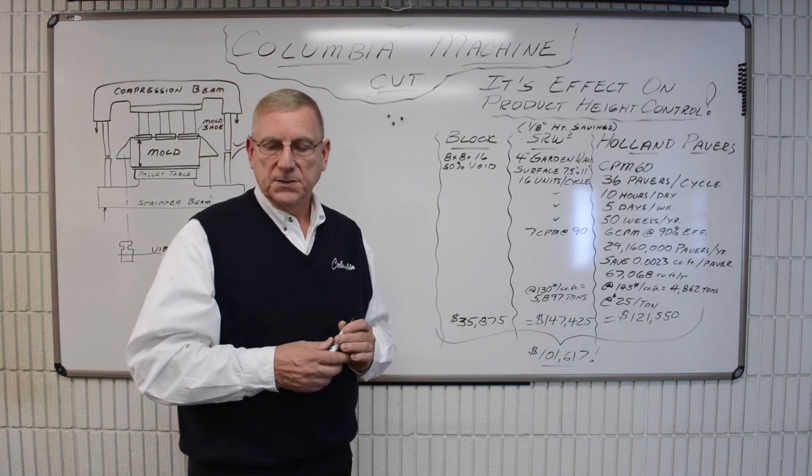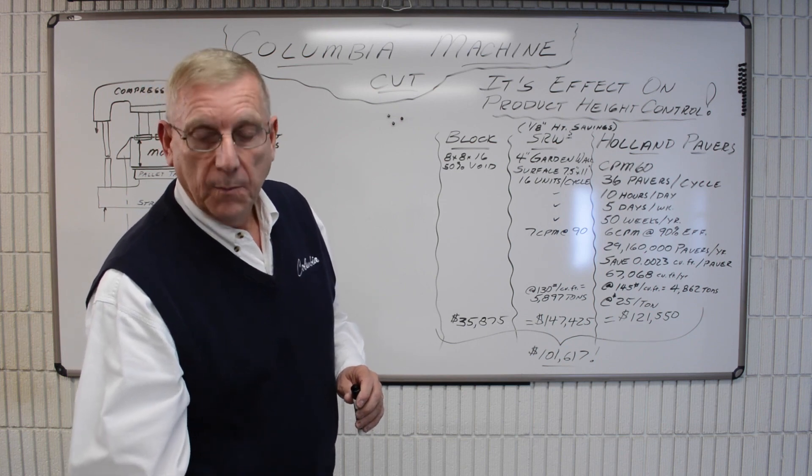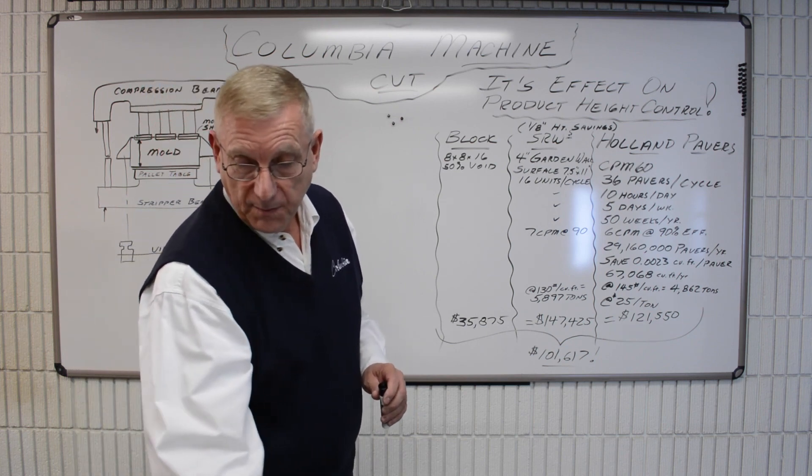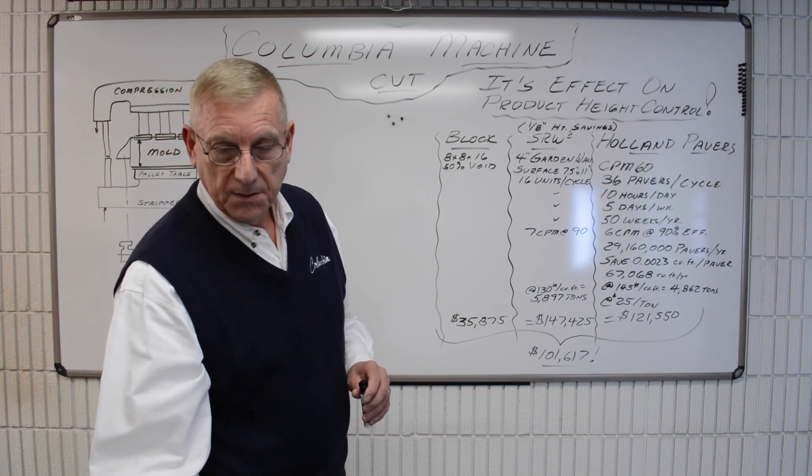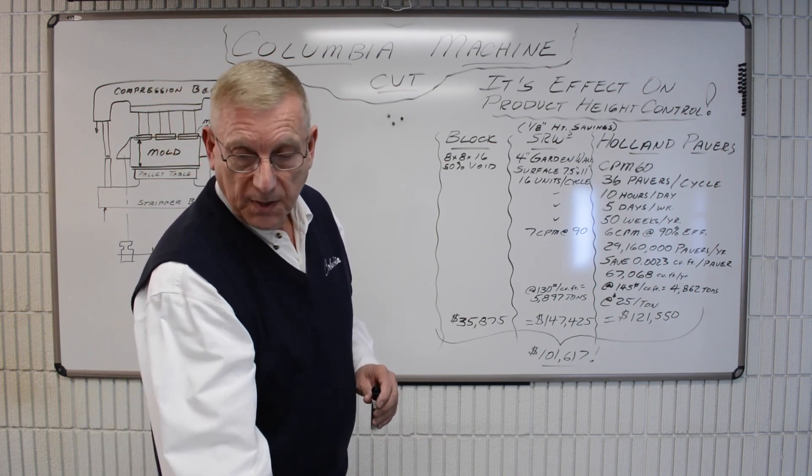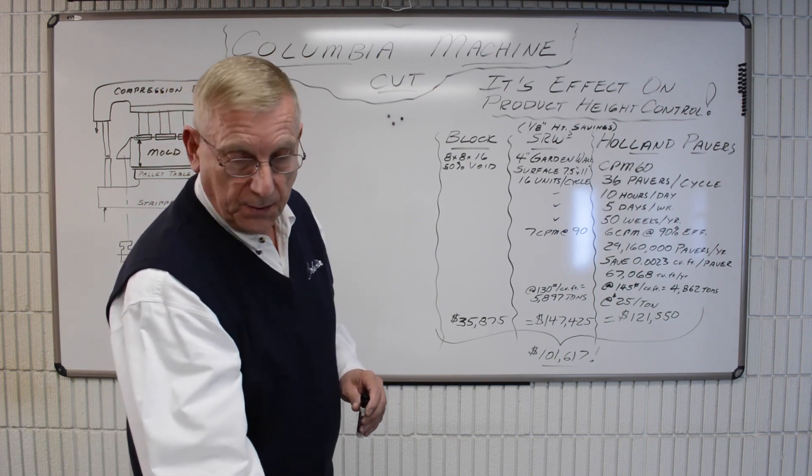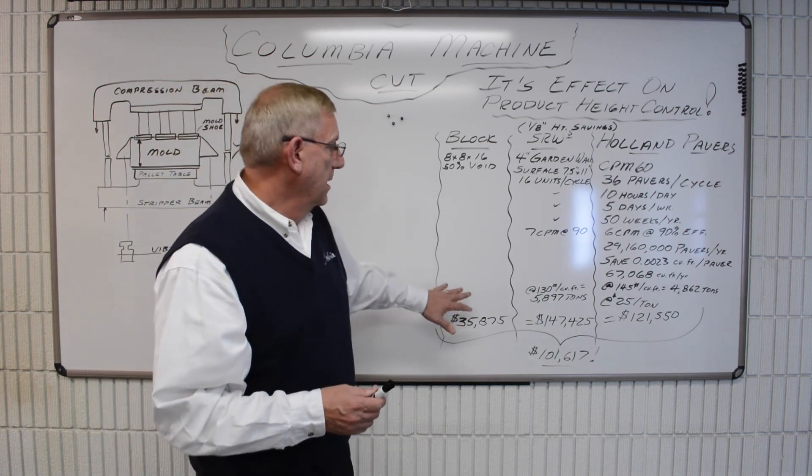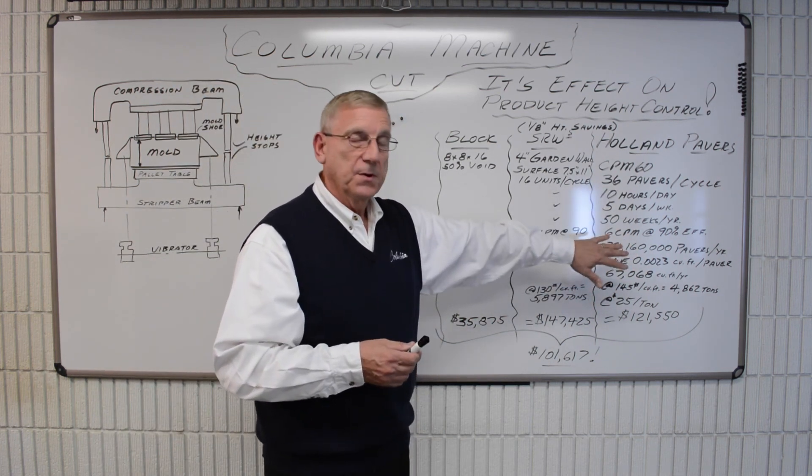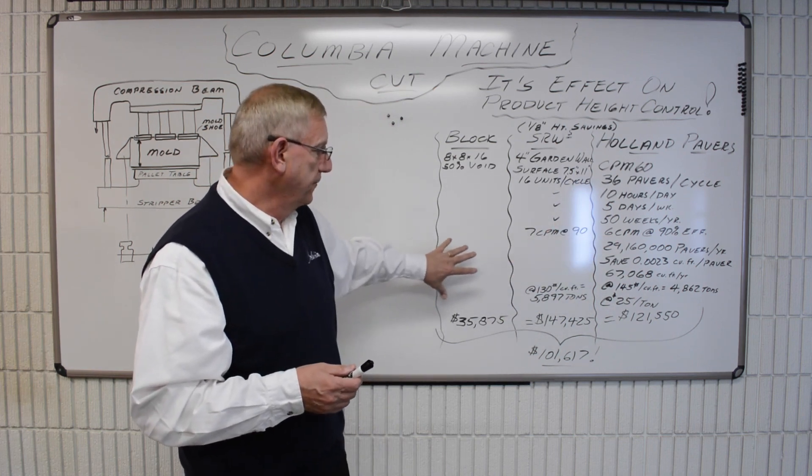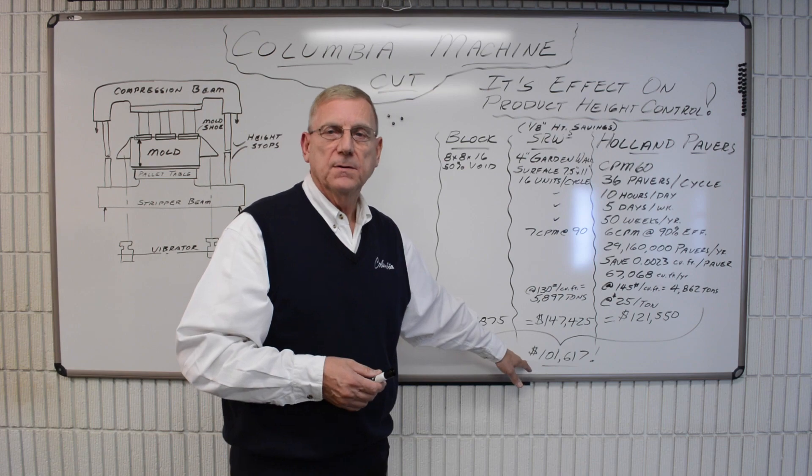Now most plants today are more versatile plants. They don't make all block products, they don't make all paver products, and they don't make all SRWs. But a lot of plants make a combination of those. And so if we assumed that you would make, say, a third production out of each of these, the average of these numbers is still over $100,000 a year.